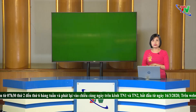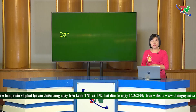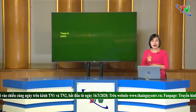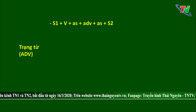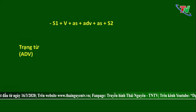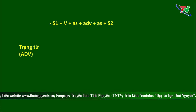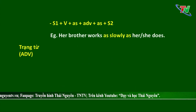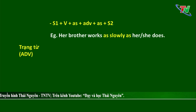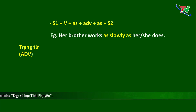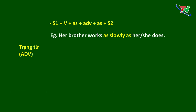Vậy với trạng từ thì sao? Trạng từ được dùng để bổ nghĩa cho động từ. Cấu trúc: Chủ ngữ 1 + động từ + as + trạng từ + as + chủ ngữ 2. Ví dụ: Her brother works as slowly as her. Hoặc nếu sử dụng chủ ngữ 'she': Her brother works as slowly as she does. Ví dụ 2 với trạng từ dài: He does as carefully as me, hoặc I do.